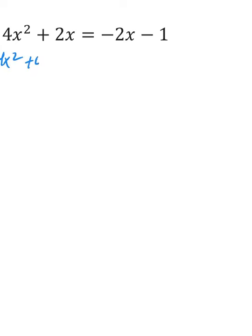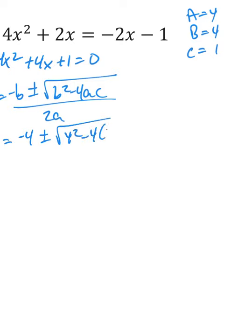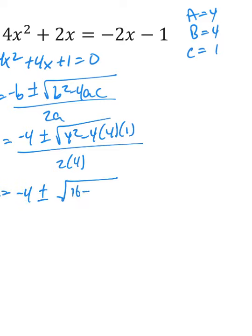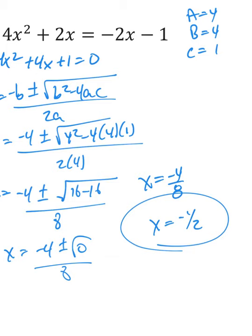Last one: get everything to one side. Starting with 4x² — add 2x and add 1 — so the equation becomes 4x² + 4x + 1 = 0. So a equals 4, b equals 4, c equals 1. x equals negative b plus or minus the square root of b² − 4ac, all over 2a: negative 4 plus or minus the square root of 4² minus 4 times 4 times 1, all over 8. That gives 16 minus 16 equals 0 under the radical. The square root of 0 is 0, so we just have negative 4 over 8, which gives one answer: negative one-half. This equation is also a perfect square trinomial, so you could have factored it to get the same answer.